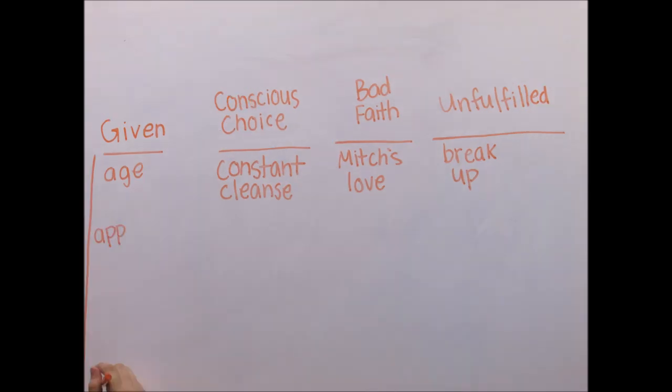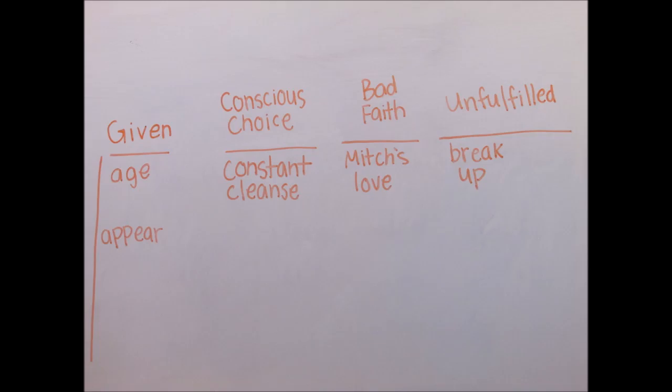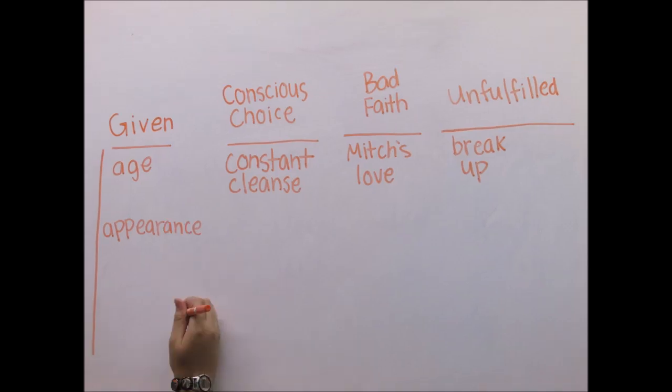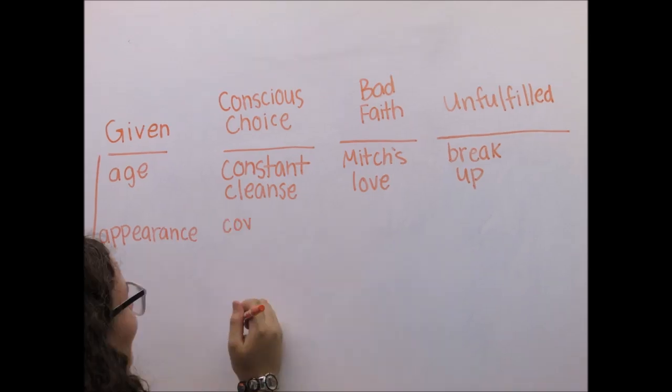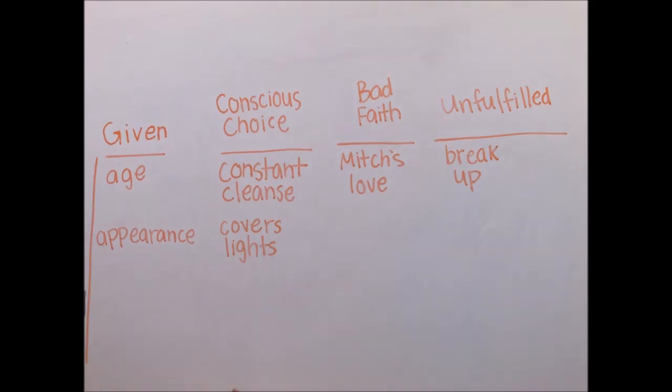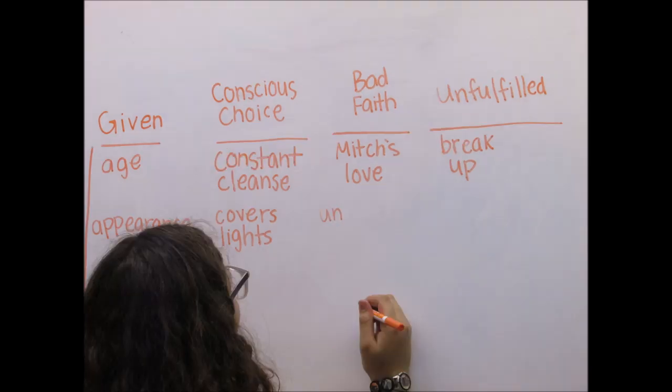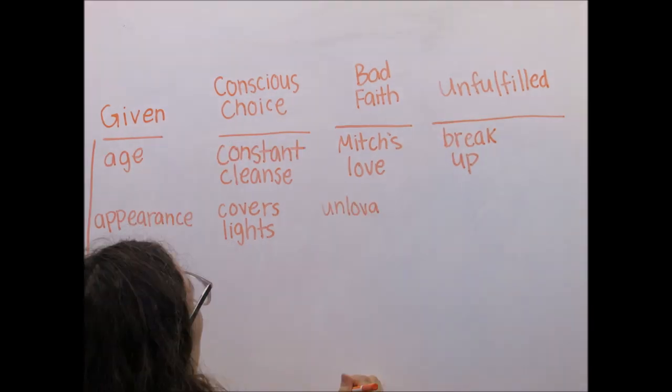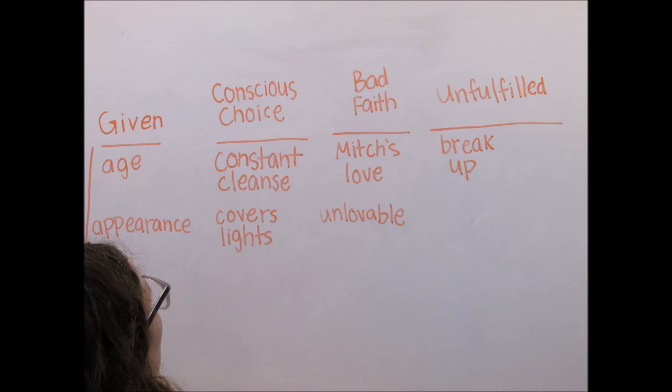Once again, Blanche tries to hide the facticity of her appearance with dim lighting and complete darkness. She knowingly and willingly dims the lights as she enters a room, giving the free will and conscious choice to choose how her situation will end. This brings in the bad faith that she must be beautiful in order for people to hang out with her, a deception she constantly tries to avoid. In one of these instances, she says that she can't stand a naked lightbulb. Just as Blanche covers the naked lightbulb, she also covers her true appearance. As is true with darkness, the darker it gets, the harder it is to find something. For Blanche, that something is the truth.